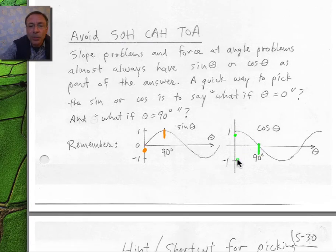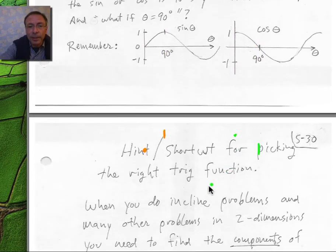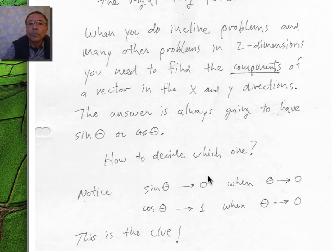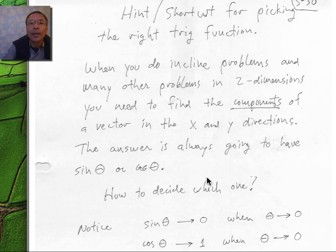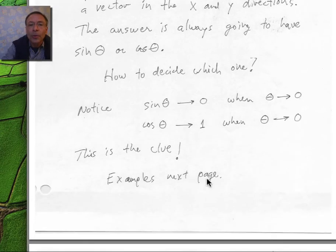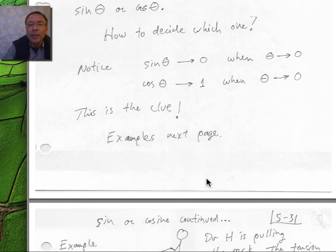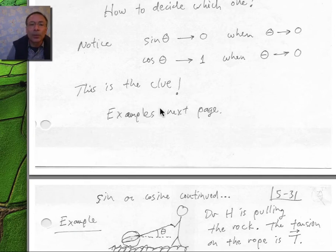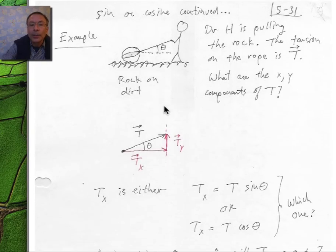This shortcut is very helpful: sine of theta is zero when theta is zero, and cosine of theta is one when theta is zero. That's the clue for choosing the right trig function. Let's do a few examples to show how this trick works.